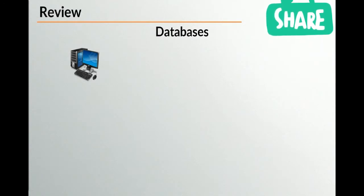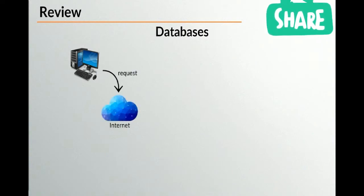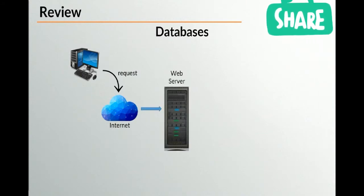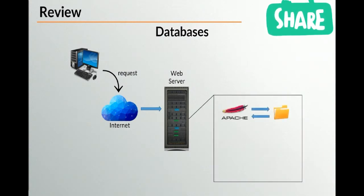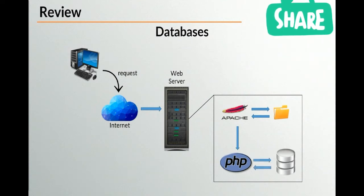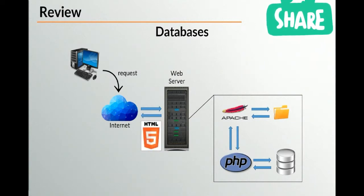Now you actually know about every single piece inside this diagram. The user makes a request to the internet for a website; the internet finds the web server on which that website is located, and then the web server starts its tasks. Apache loads up its file system, the PHP module scans all the files, creates any interactions with the database it needs to make, and after all processing is done it sends pure HTML back to the user's browser.